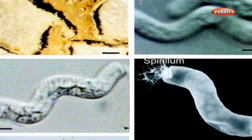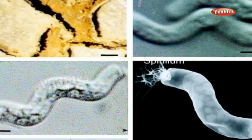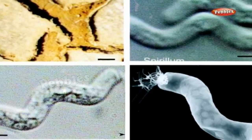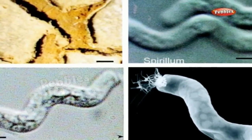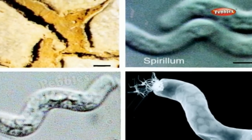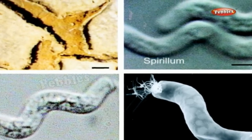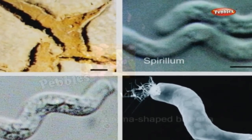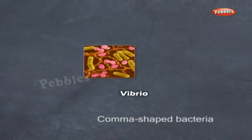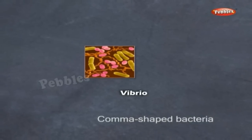Spirillum bacteria are twisted like a corkscrew, or spiral in appearance. They may have flagella at both ends. Vibrio are comma-shaped bacteria.